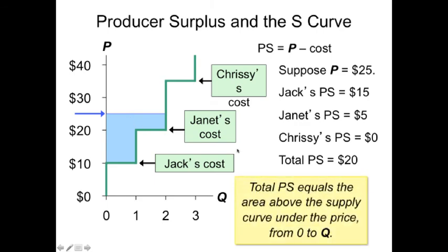So the total producer surplus is the area above the supply curve but below the price that you see in the market. Once again, this is more of a step supply curve. But once we see a smooth supply curve, we'll be seeing the exact same trend in that case.